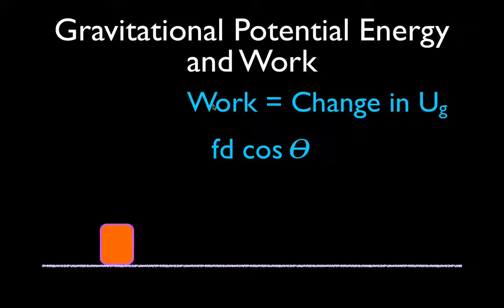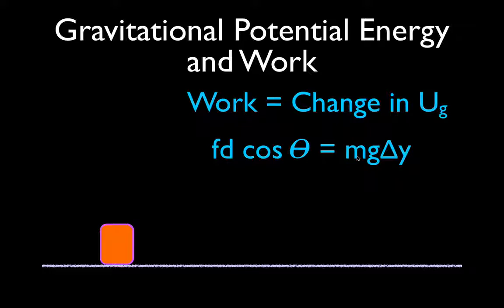And that is going to be equal to, as we showed in a previous example, our equation for the change in gravitational potential energy, which is mg delta y — the mass times the acceleration due to gravity times the change in the y position of the object, or the change in height.